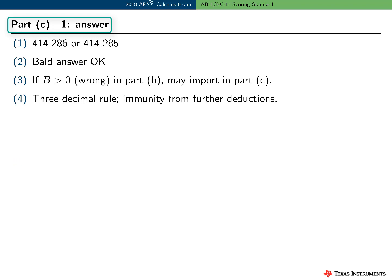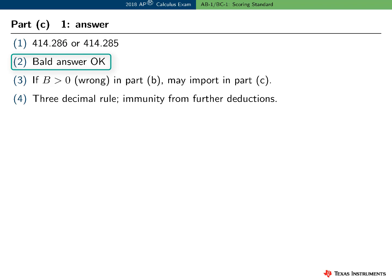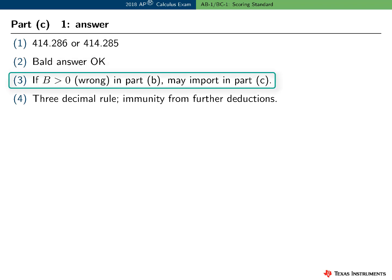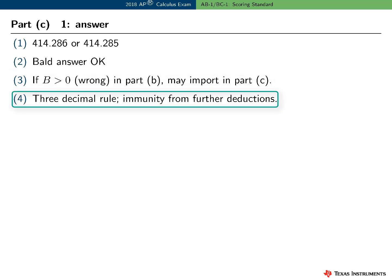Part C was worth one point for the answer. We accept the final numerical answer with three digits to the right of the decimal, rounded or truncated. A bald answer was accepted for the point. If the student's answer in Part B was wrong but greater than zero, they could import that value into Part C. A reminder that if a student commits a decimal presentation error, they are immune from another decimal presentation error in the same problem — a student can lose at most one point in a problem for a decimal presentation error.